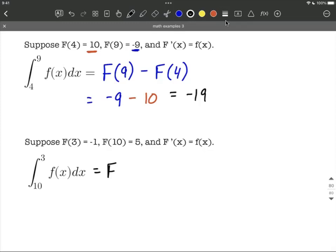It's going to be big F of the upper bound, and I know it feels wrong that 3 is a smaller number than 10, but that goes as our upper bound, so you're going to fill that in first, minus big F of 10.